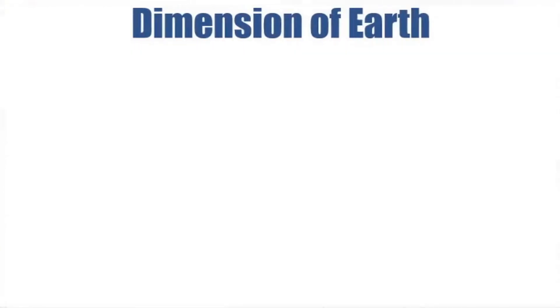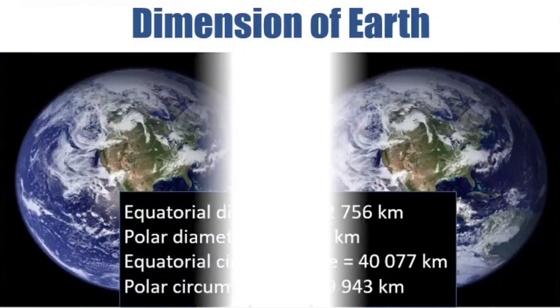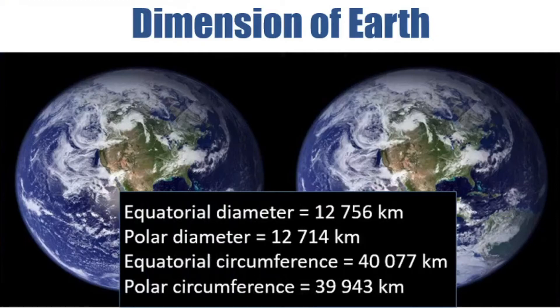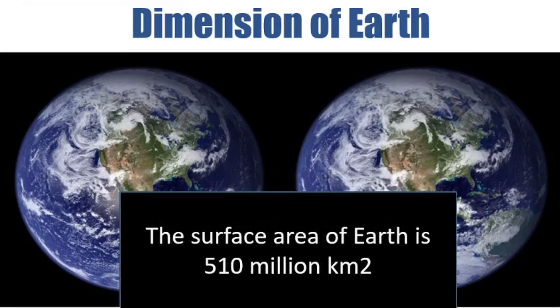Now let's move on to learn about the dimension of Earth. Equatorial diameter is 12,756 kilometers. Polar diameter is 12,714 kilometers. Equatorial circumference is 40,077 kilometers. Polar circumference is 39,943 kilometers. The surface area of Earth is 510 million square kilometers.